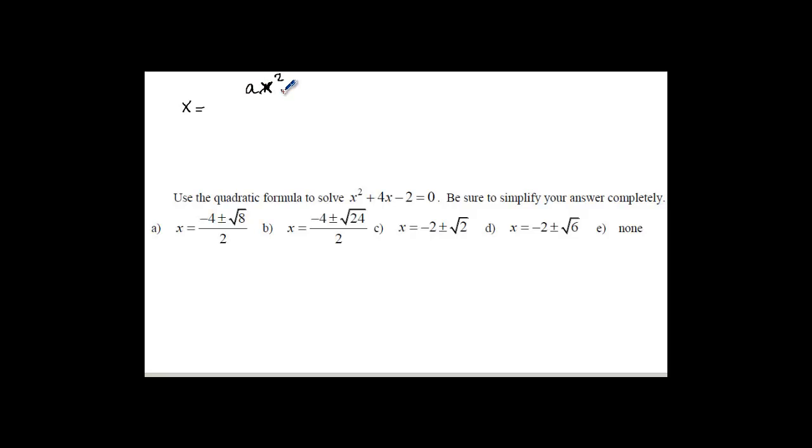So if I have ax² + bx + c = 0, what is x equal to? Can you just tell me the formula? Negative 4 plus or minus square root of 24 over 2.